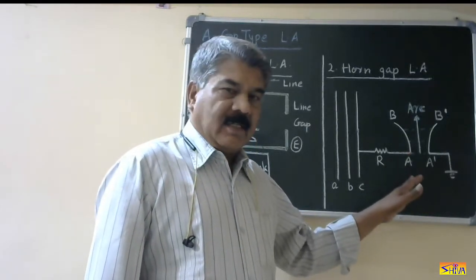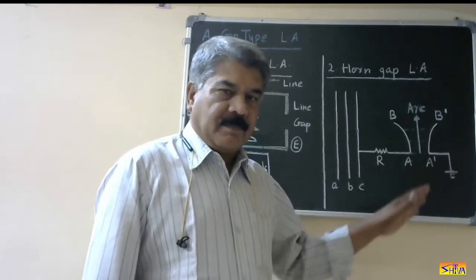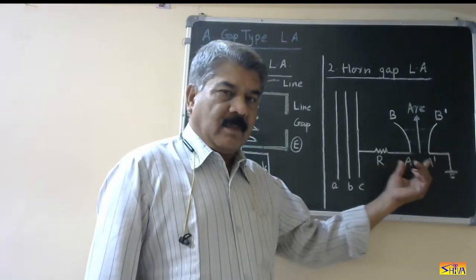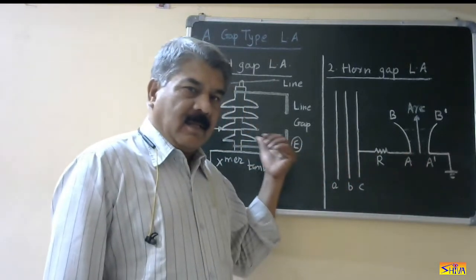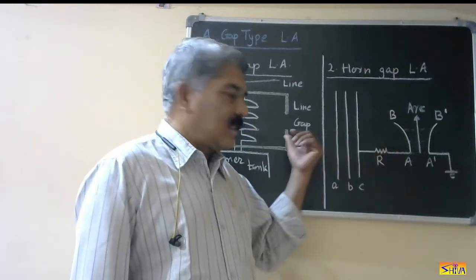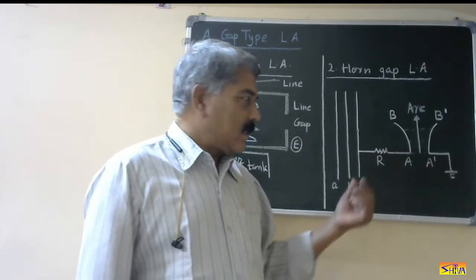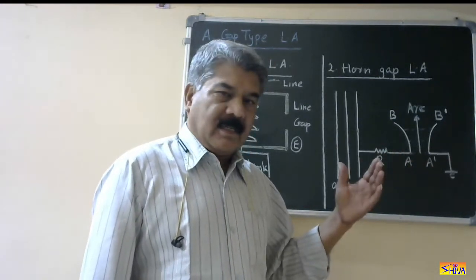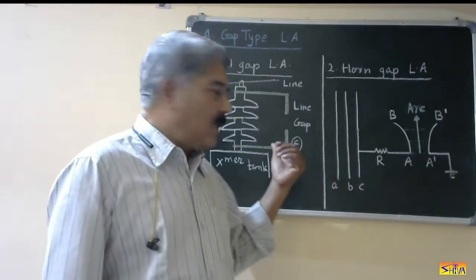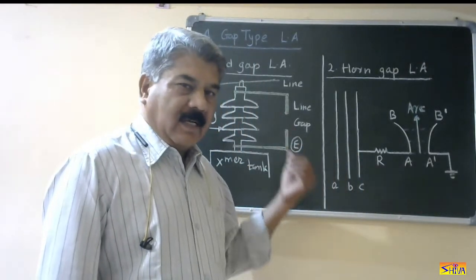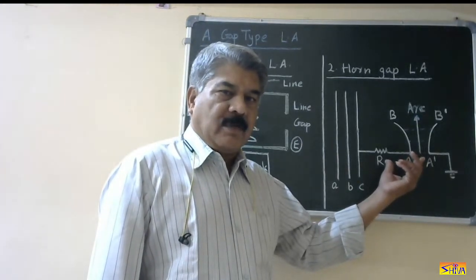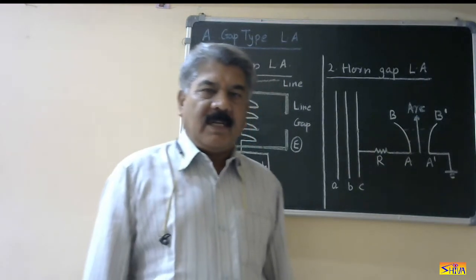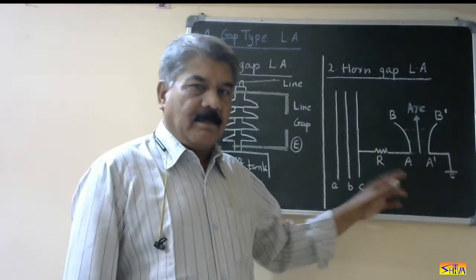The advantages of the horn gap arrester are that it is simple and cheap, but the same drawbacks apply. The arc persists for a longer time, but relatively less than for the rod gap type. The power frequency follow current flows for a longer duration, but that duration is less than for the rod gap type. Here also the insulating medium is air, so it is affected by atmospheric conditions as well as the polarity of the incoming impulse voltage.